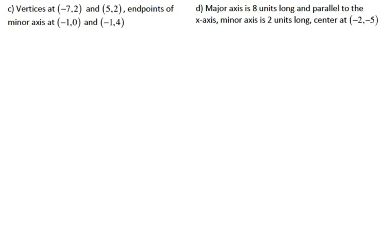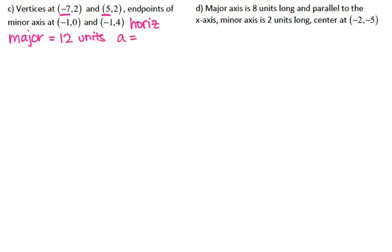Letter C: I have my endpoints of my vertices at (−7, 2) and (5, 2). Endpoints of my minor axis are at (−1, 0) and (−1, 4). Looking at my vertices, it's my X coordinates that are different, so I'm going to have a horizontal major axis. The distance from −7 to 5 is 12 units, so the entire major axis is 12 units long, which means A is half of that — A is six.